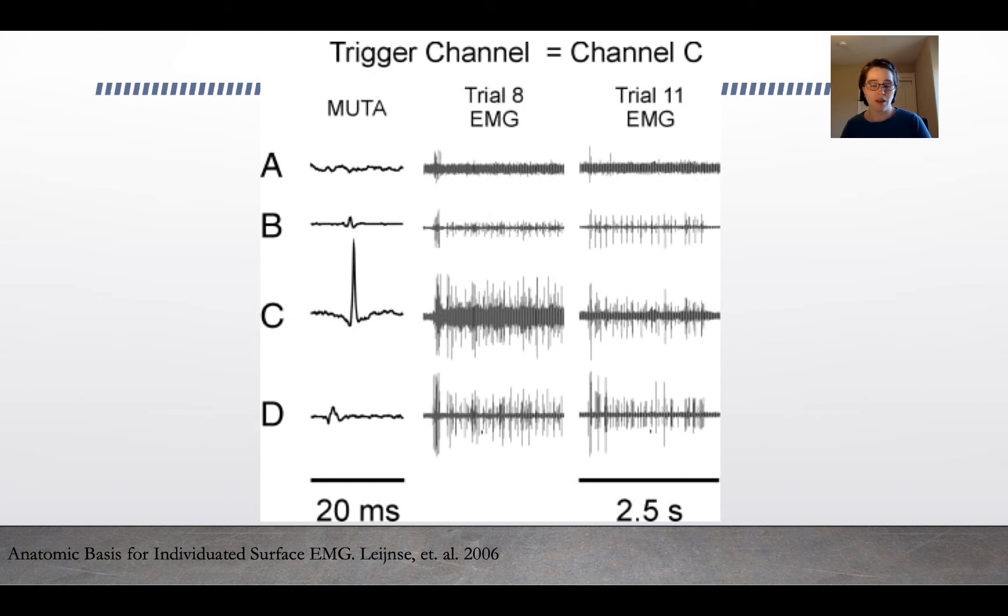There's not actually a lot going on in channel B. The leftmost column here is the muscle trigger, and trials 8 and 11 EMG are the signals being picked up. You can see that in B there's very little actually happening, but there's quite a bit of noise in trial 11, and that's probably due to all of the activity in muscle C. So crosstalk is a problem.